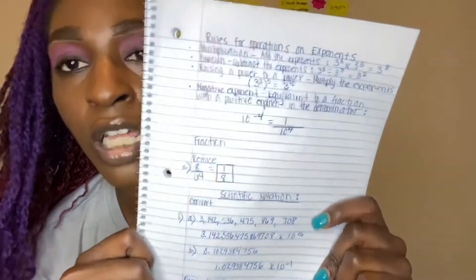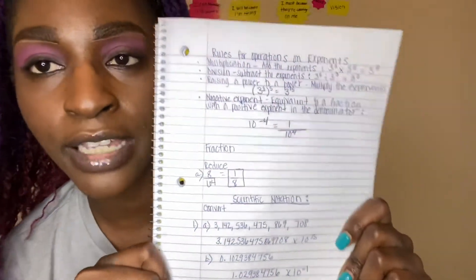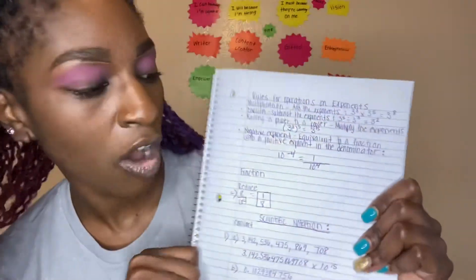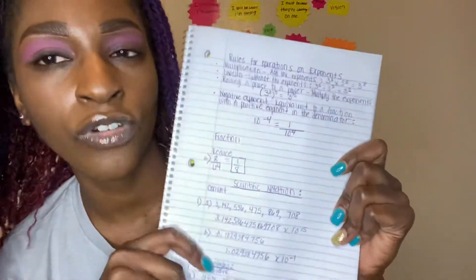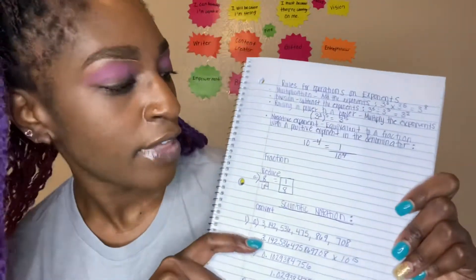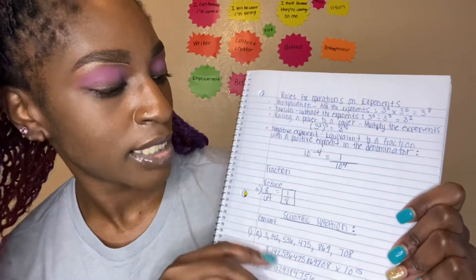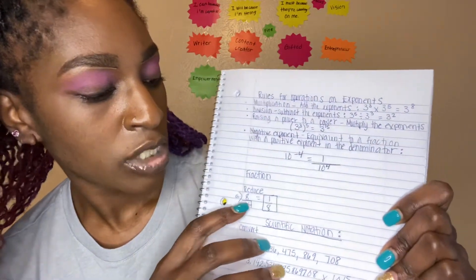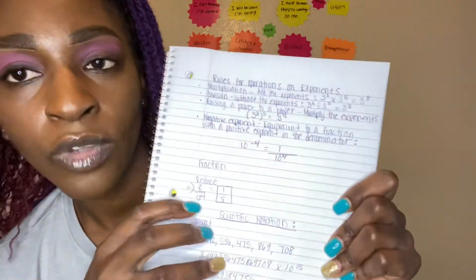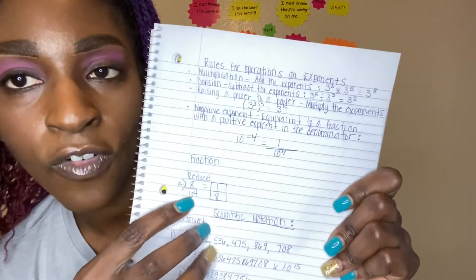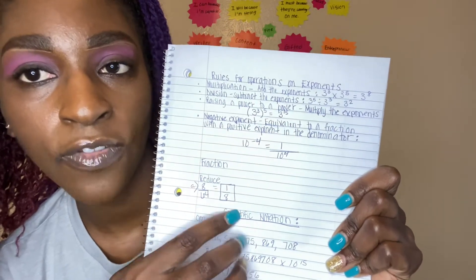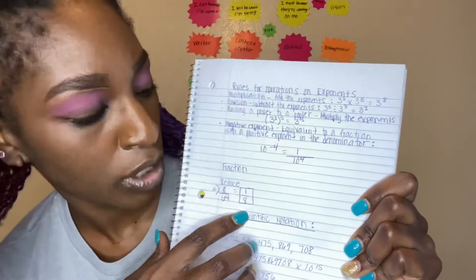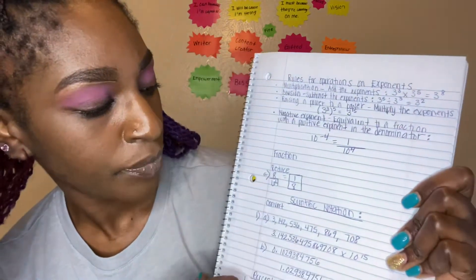Fractions is another one they like to do a lot, and they always like to say simplify and reduce. So, 8 over 64 — 8 goes into 8 one time, and 8 goes into 64 eight times — so you get 1 over 8.